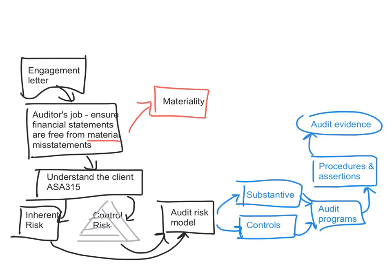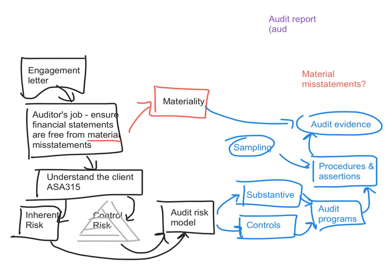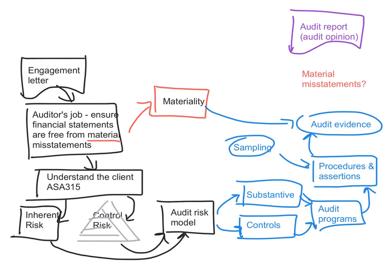As part of those procedures I think about materiality and sampling — I can't test everything, so I need to determine whether my evidence is sufficient and appropriate. I use that evidence and my materiality to identify whether there are any material misstatements: dollar value errors in the accounts or insufficient disclosures. Then I negotiate with management, and the final output is my audit report containing the audit opinion.